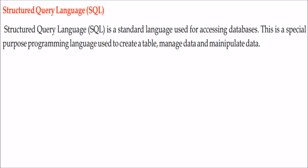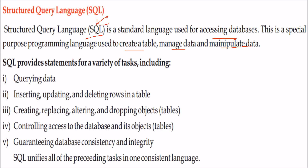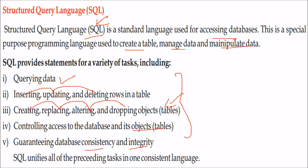What is SQL? SQL — Structured Query Language — is a standard language for accessing databases. It is not a general-purpose language like C, C++, or Java. SQL is a special-purpose programming language specifically made for database access: creating tables, managing data, and manipulating data. SQL provides various tasks: querying data, inserting, updating and deleting rows, creating, replacing, altering and dropping objects, controlling database access, and guaranteeing consistency and integrity.